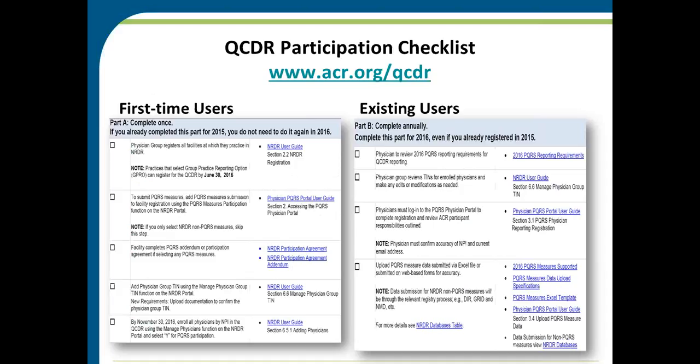We have a participation checklist to help you know everything that needs to happen between now and March 31st. You can download it at any time and it is also available today as a handout on your screen — please download it and save it now, because once the webinar ends the handout disappears.